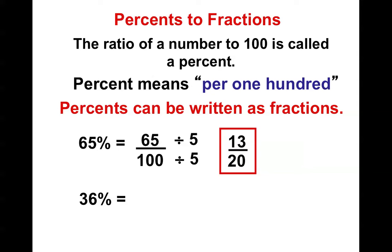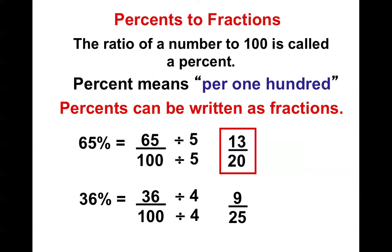36% — why don't you give it a shot? So 36% is 36 over 100. Can you simplify it? Yes. Divide by 4, divide by 4, and I get 9 over 25.